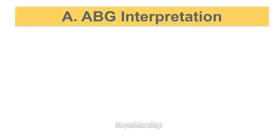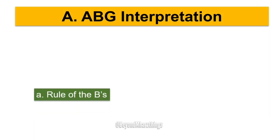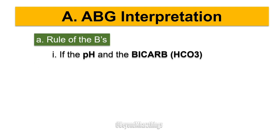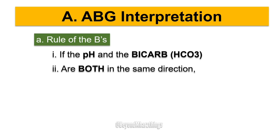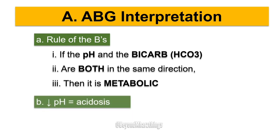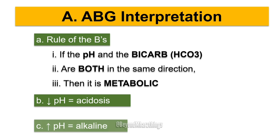ABG Interpretation. A: Rule of the Bs — if the pH and the bicarb (HCO3) are both moving in the same direction, then it is metabolic. B: Low pH equals acidosis. C: High pH equals alkalosis.